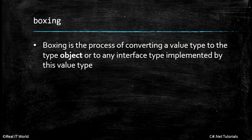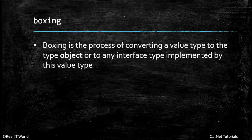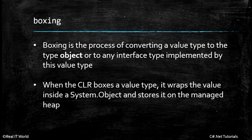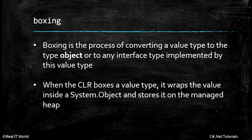Another case: if some interface is implemented by any value type — for example, in structs we can implement interfaces — we can store that struct value type inside the interface implemented by that value type. So storing a value type inside object is boxing, or storing a value type inside an interface implemented by that value type is also boxing. When the CLR boxes a value type, it wraps the value inside a System.Object and stores it on the managed heap. You can check the reference types part of csharp.net for more on managed heap.